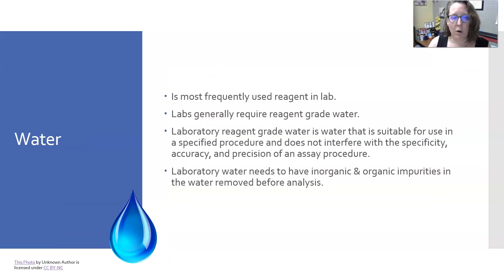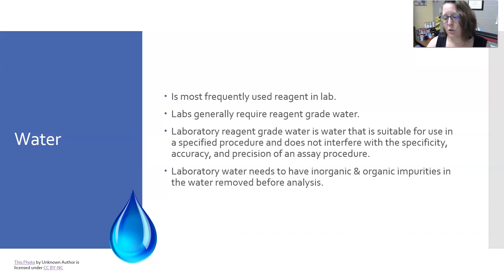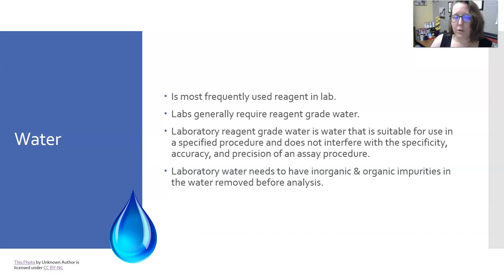Let's talk about water. Water is the most frequently used reagent in the lab. Labs generally require reagent grade water — water that is suitable for use in a specified procedure and will not interfere with the specificity, accuracy, or precision of the assay procedure. For example, if you were trying to analyze trace metals in a sample, you would not want to use tap water because it may have lead from lead pipes in it. Lab water needs to have inorganic and organic impurities removed before analysis.